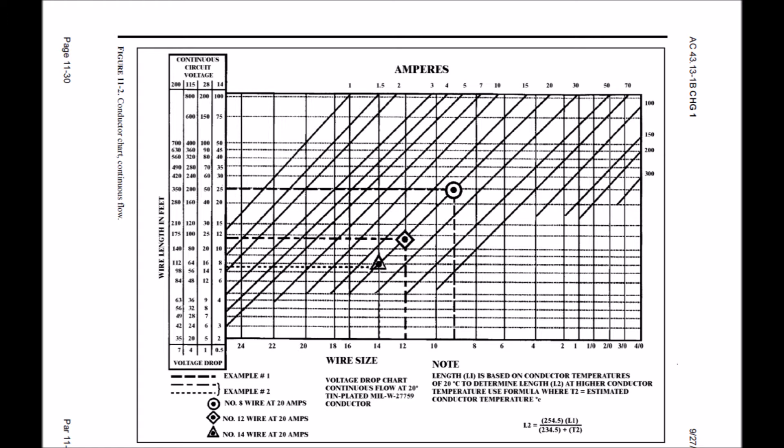Let's assume we have a 12-foot wire length total for this circuit. In yellow here, you'll see I've highlighted 5 amps at the top. I've highlighted 14 volts at the top of the continuous circuit voltage column, and now I will highlight the 12-foot mark in that wire length in feet column, all highlighted in yellow.